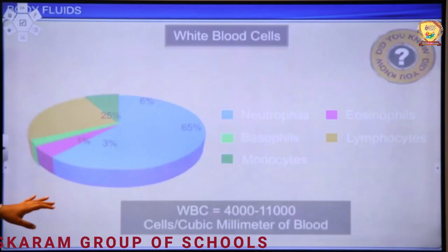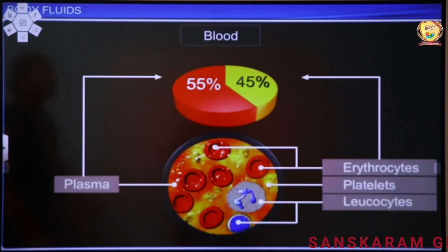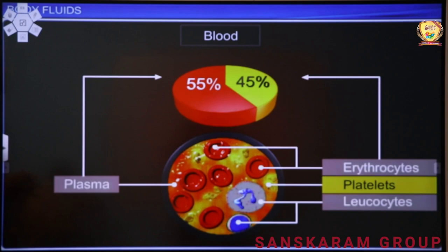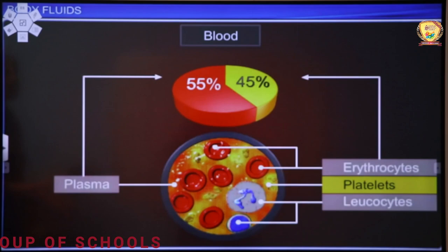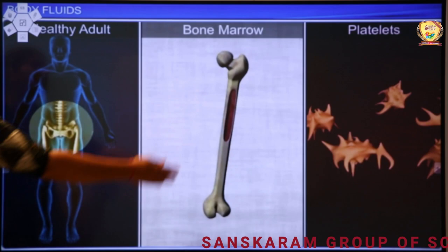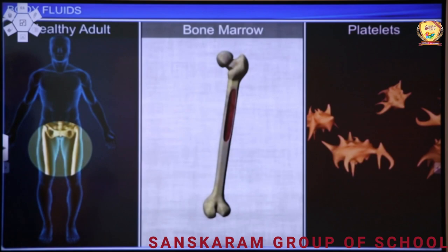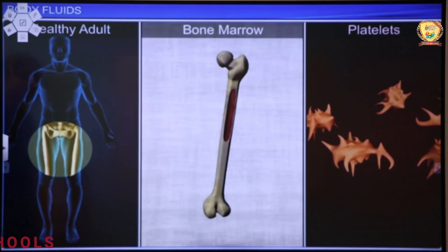Moving ahead to platelets. The yellow-colored cells shown on screen are the platelets. Their function is to help in blood clotting — they secrete prothrombin, which gets converted into thrombin and helps form a network of fibrins (from fibrinogen), which finally helps in blood clotting. Their synthesis, just like RBCs, takes place in the bone marrow.